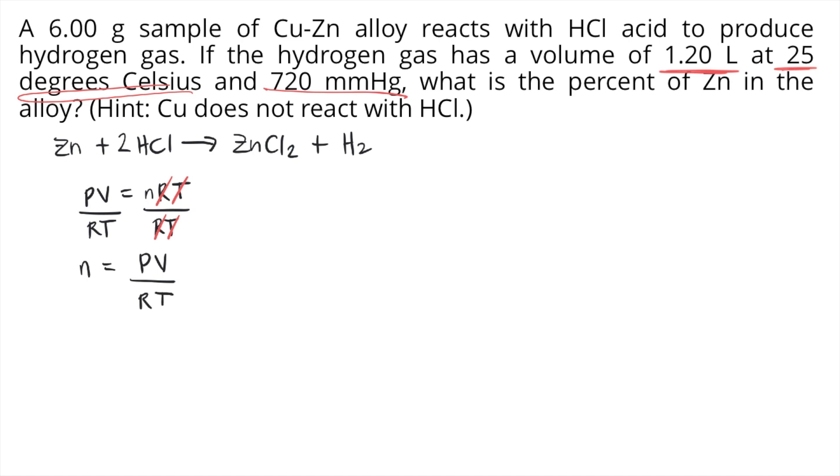The pressure is 720 mmHg, but we need to convert that to atm first. 720 mmHg × (1 atm / 760 mmHg) = 0.947 atm. So that is the pressure to plug into the equation.